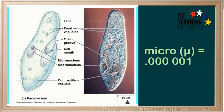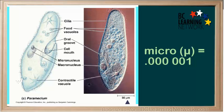The micrometer is a very small unit. It is one times ten to the minus six, or one one-millionth. It is often represented by the Greek letter mu. Bacteria are measured in nanometers. The prefix nano means one times ten to the minus nine, or one one-billionth.